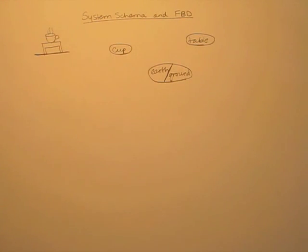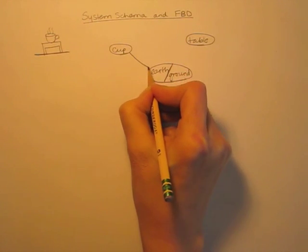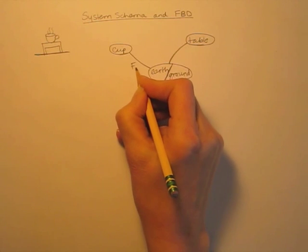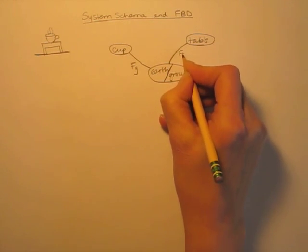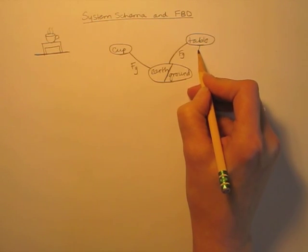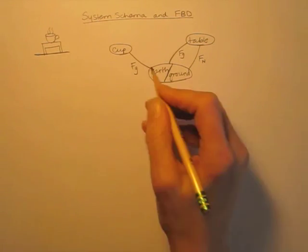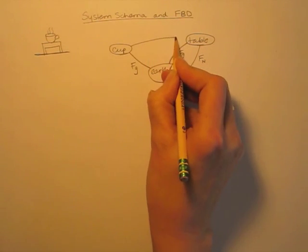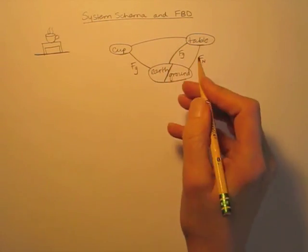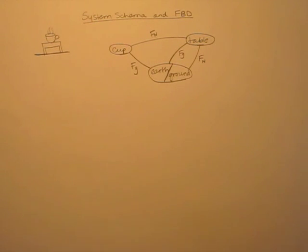Now to draw our interactions. There is a gravitational interaction between the cup and the earth, and the table and the earth. The table is resting on the ground, so the ground must be supporting the table with a normal force. And there is contact between the cup and the table — two surfaces in contact pressed together — and that is another normal force. So this is all of the interactions.